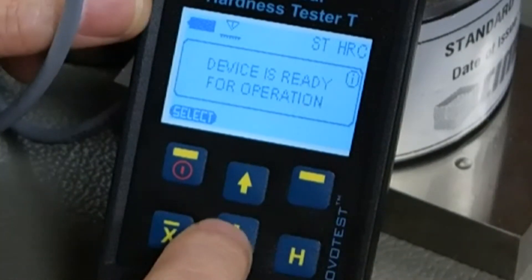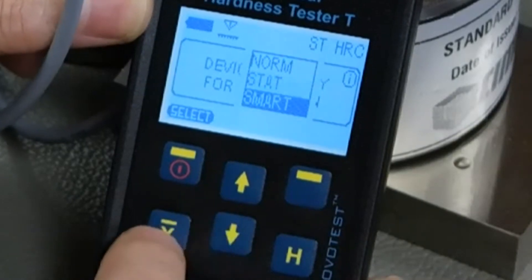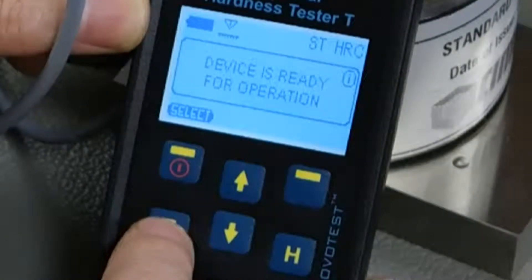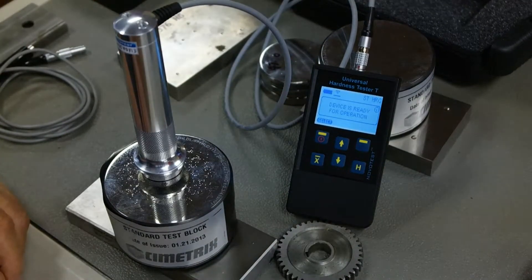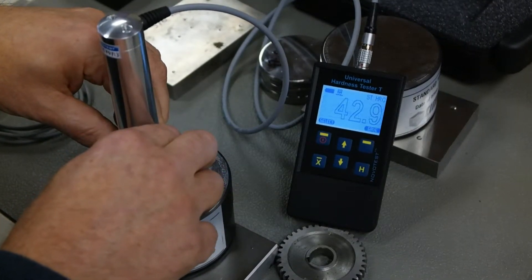The other thing that we have inside the device under select is smart. Smart is in the U3 and in this U2 device. And what this means is that if I do an erratic test, it automatically will reject it. But initially it doesn't know what the hardness is.